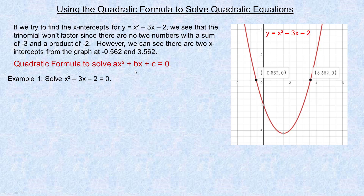So we need the quadratic formula to find these. There actually is another way to do it — completing the square — but the formula is a more efficient way to do that. In order to use the quadratic formula, you need the quadratic equation in standard form: all the terms on one side set equal to 0.